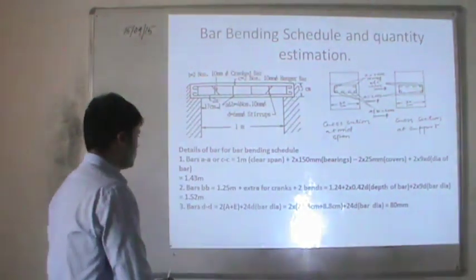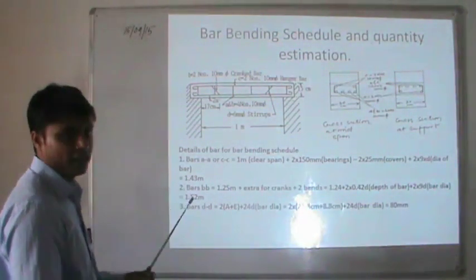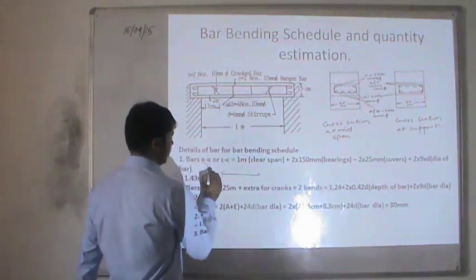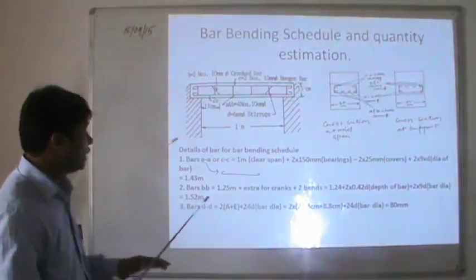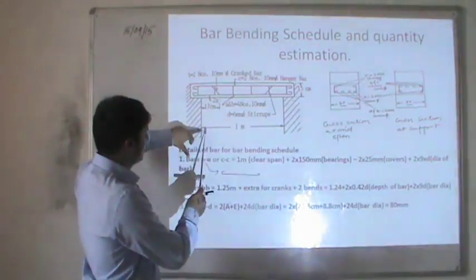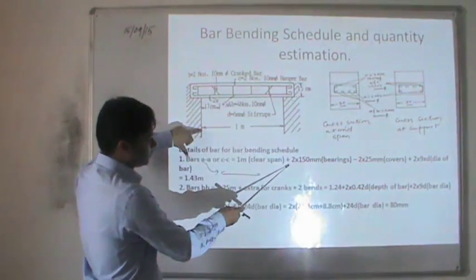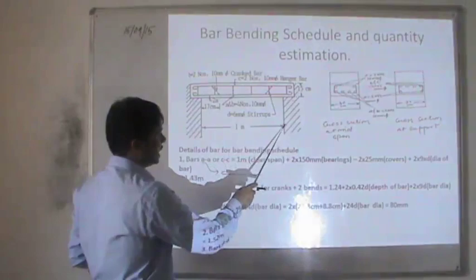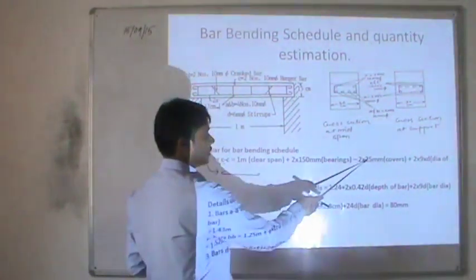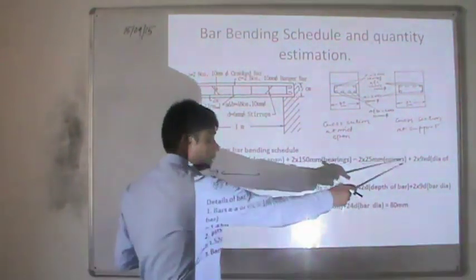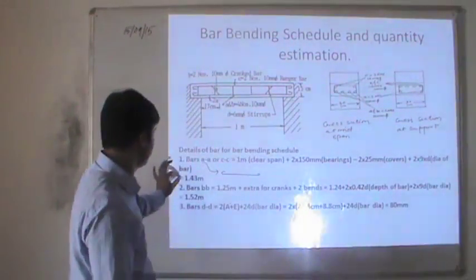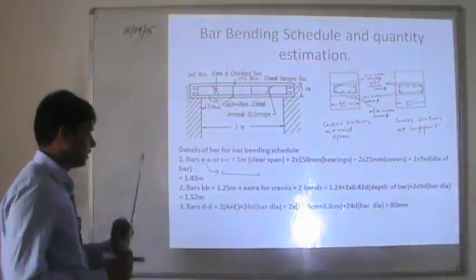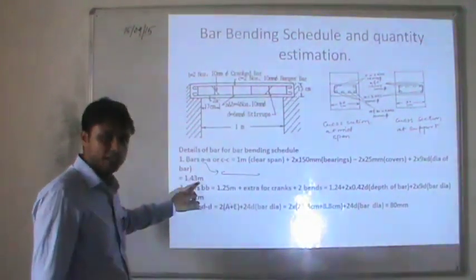The details of bars for the bar bending schedule are as follows. First, if we are using bar A, this bar will be a straight bar. To find out its length, we add the clear span plus 150 mm bearing on each side, minus the cover (taken as 25 mm), plus 2 × 9D, where D is the diameter of the bar. This gives the length of the straight steel bar as 1.43 meters.